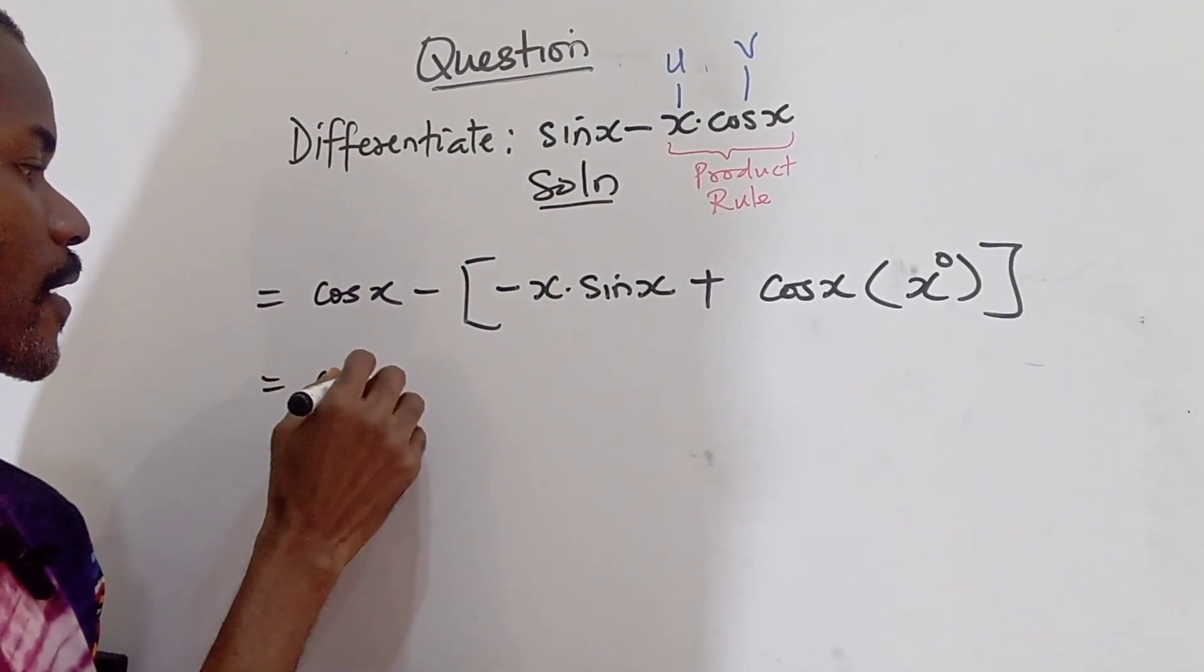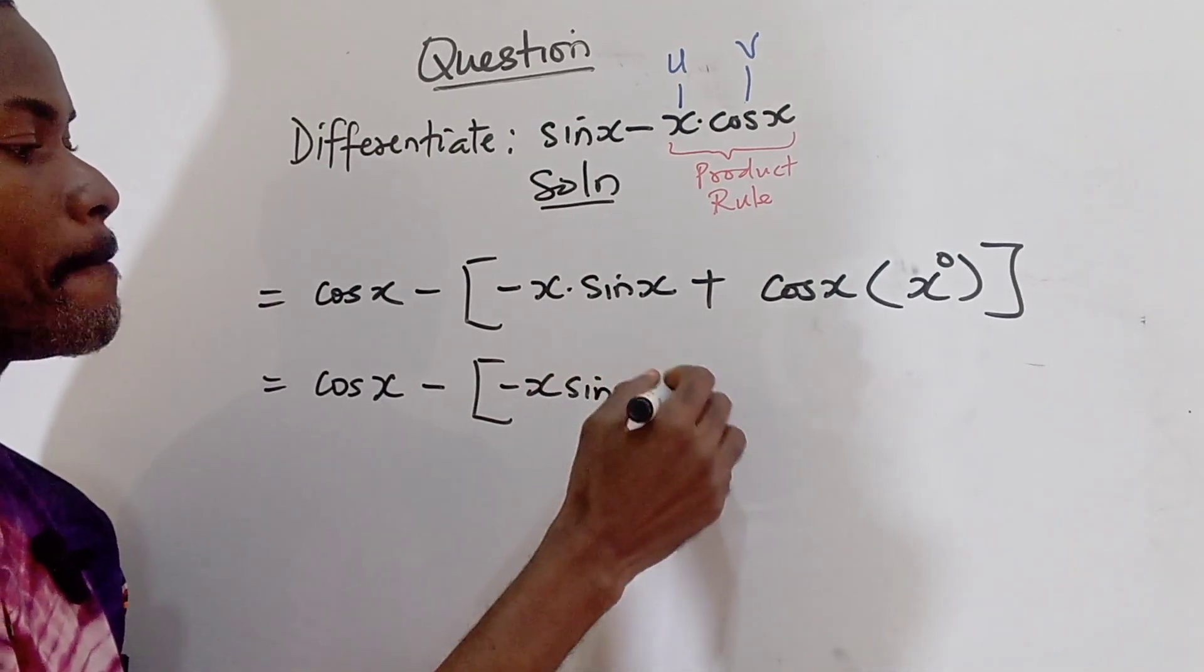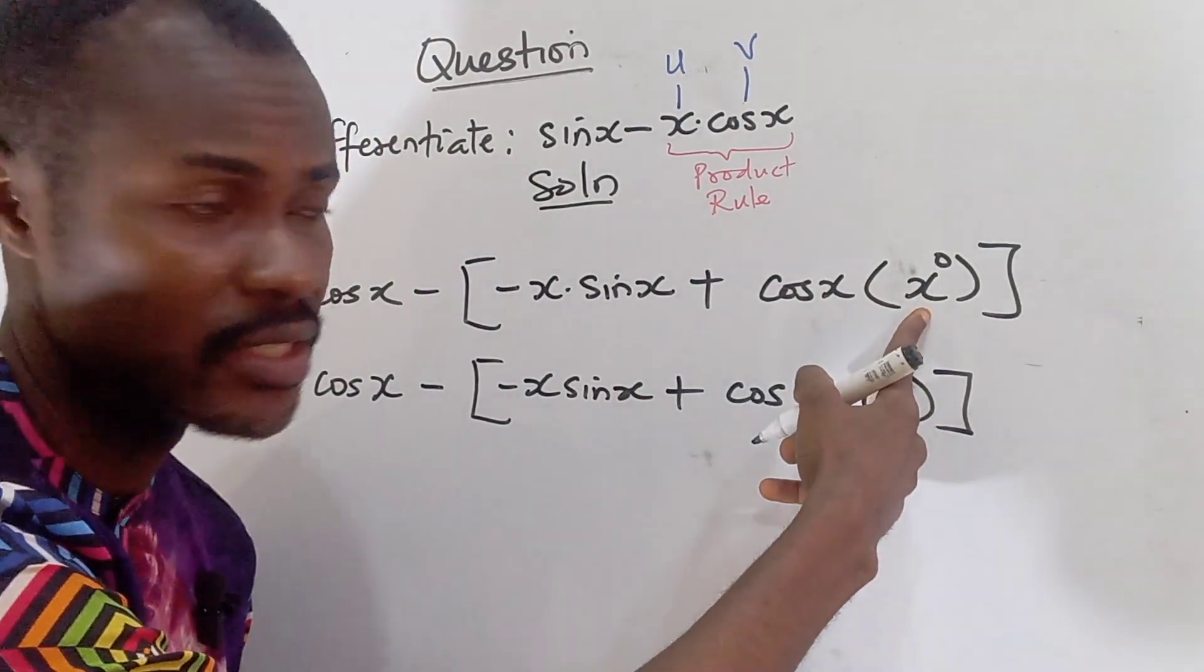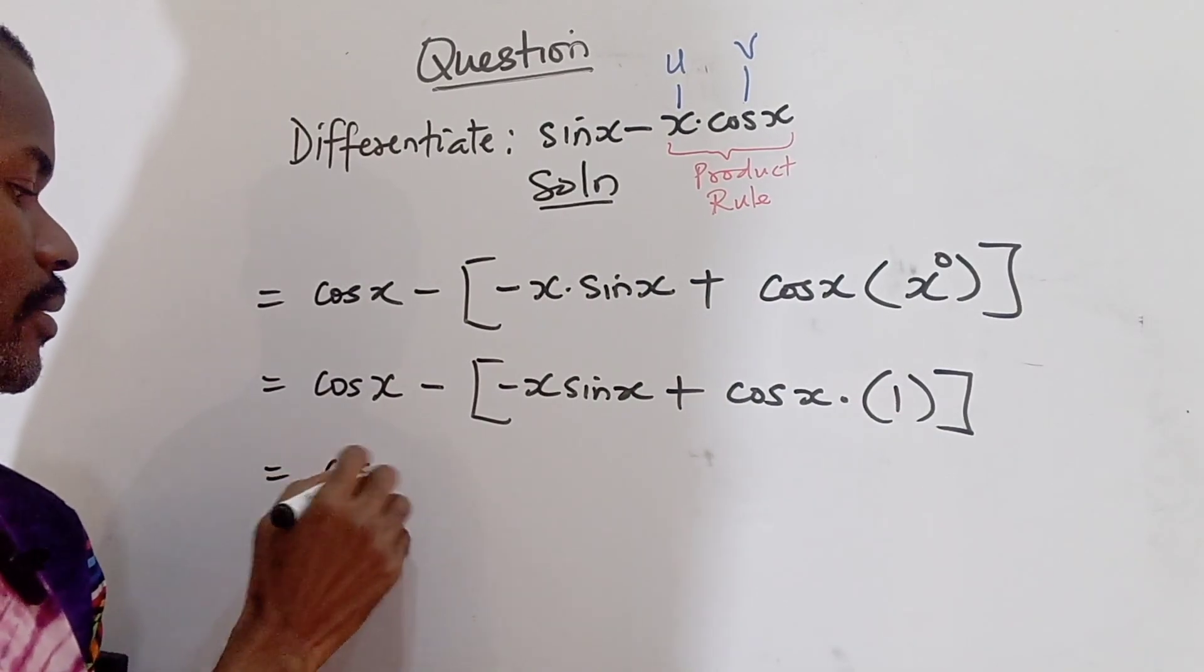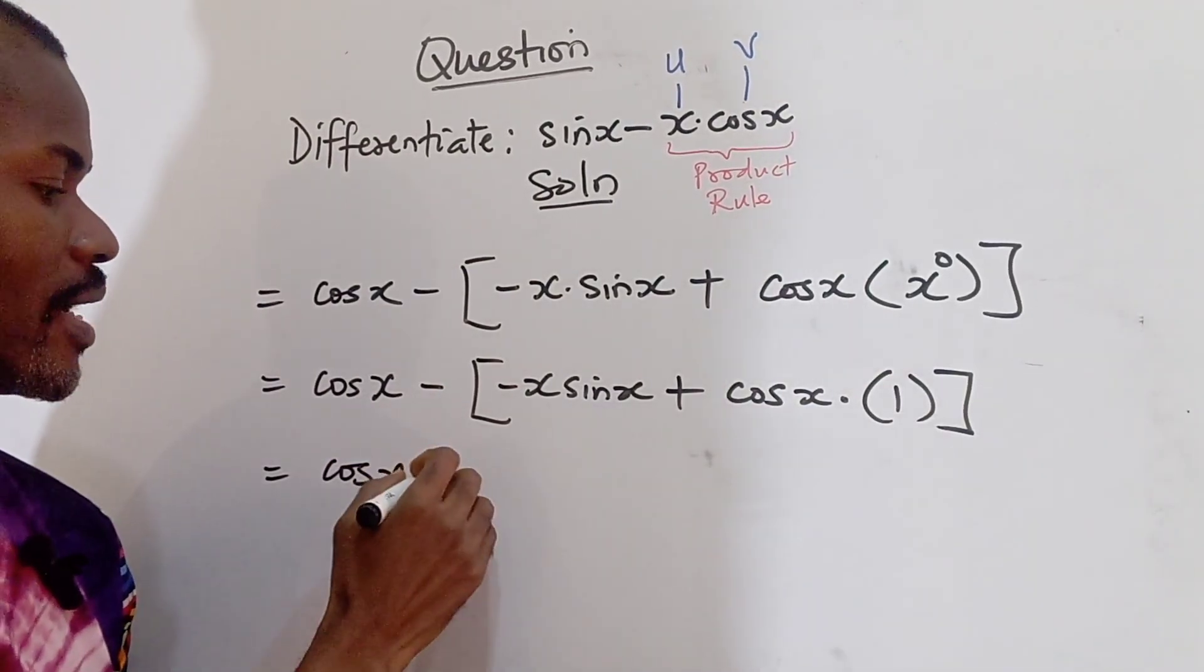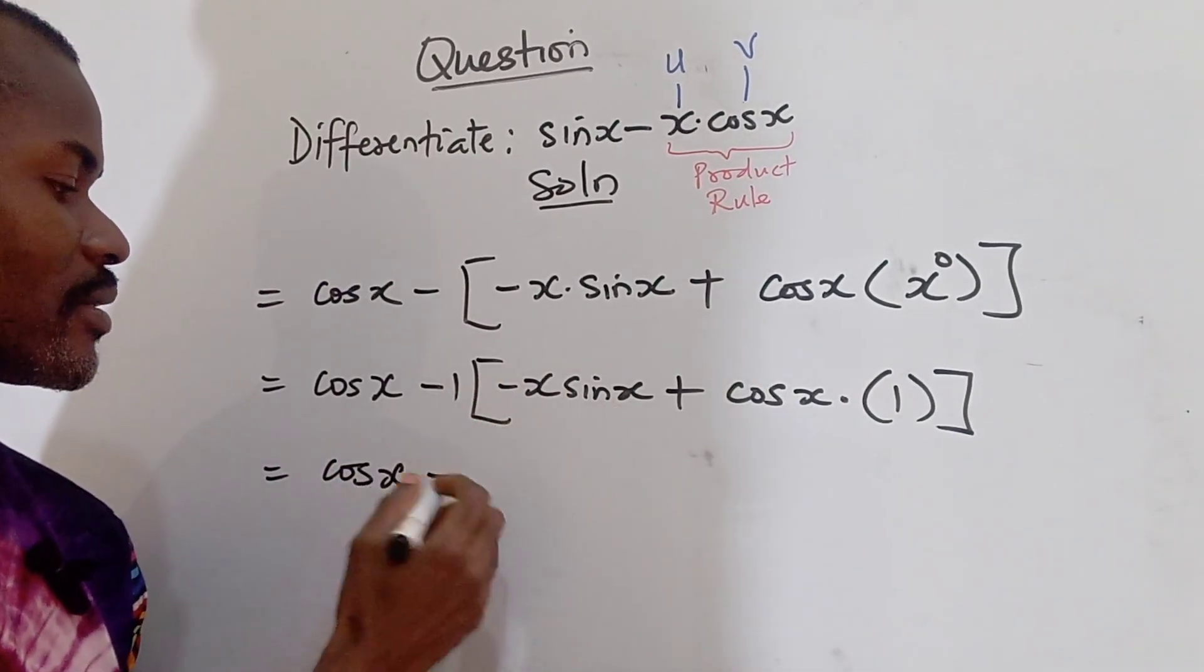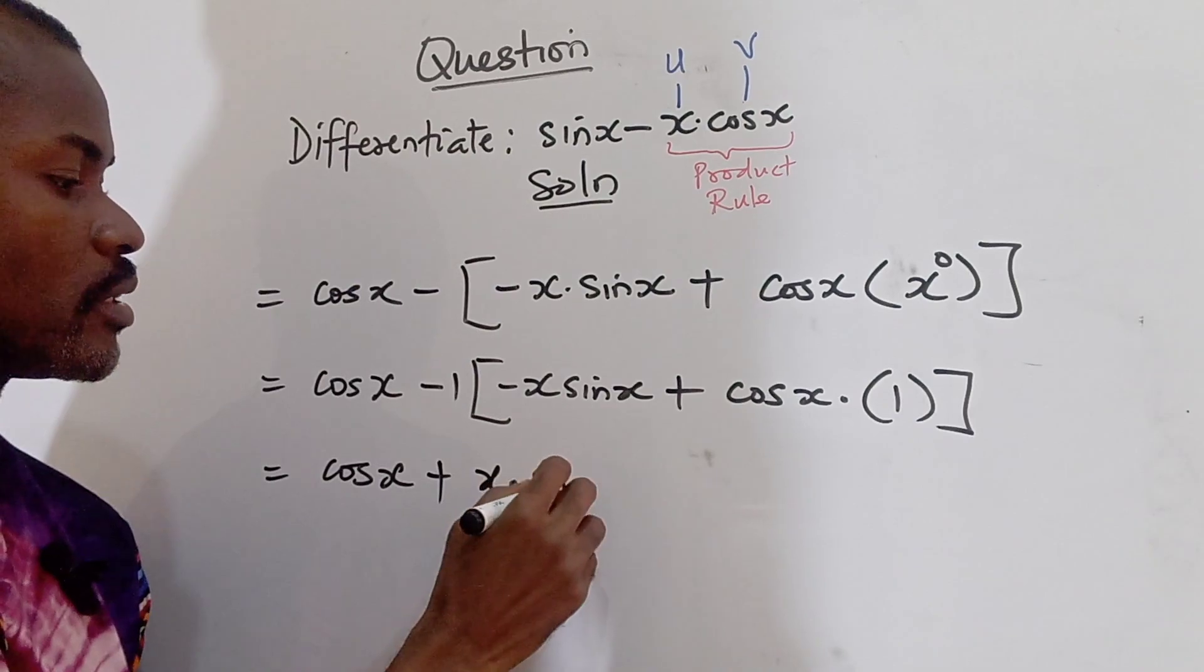So let's simplify further to see what we are going to get. So this will give us cos x minus x sine x plus this is cos x multiply, this is 1. With your basic knowledge of indices, x raised to the power of 0 is 1. So we have this as cos x. Minus is going to multiply all this. So I have minus, I can decide to put 1 there. So minus 1 times minus x sine x. Minus times minus is going to give me plus. 1 times all this is going to give me x multiply sine x.